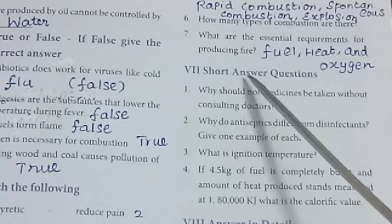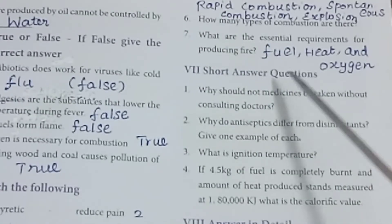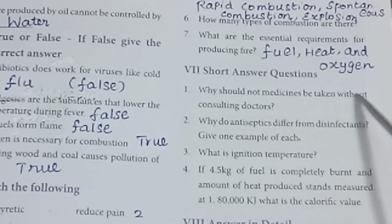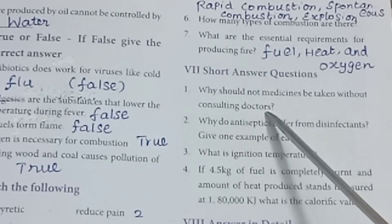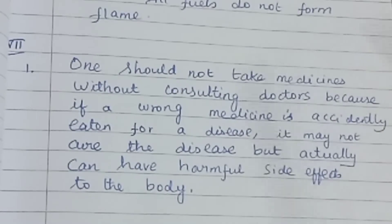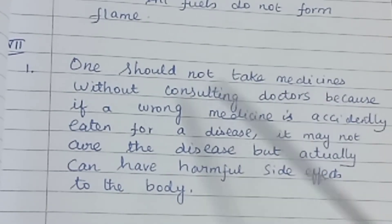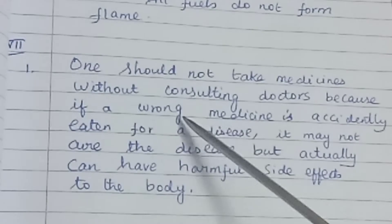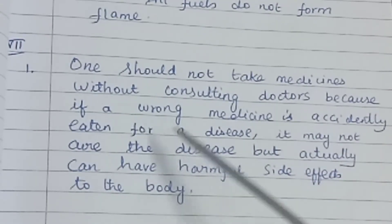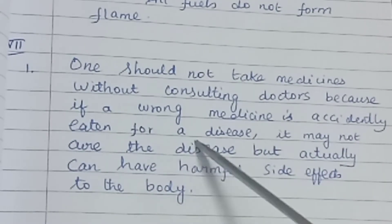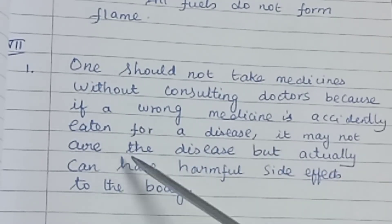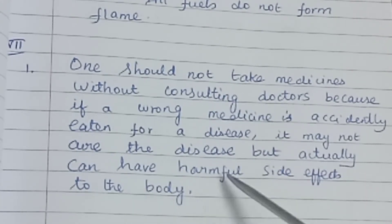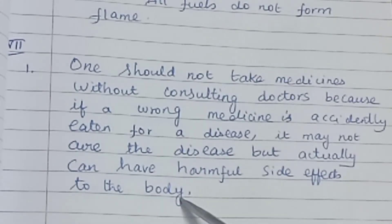Roman numeral 7: short answer questions. First: Why should medicines not be taken without consulting a doctor? One should not take medicines without consulting a doctor because if a wrong medicine is accidentally taken for a disease, it may not cure the disease but can actually have harmful side effects on the body.